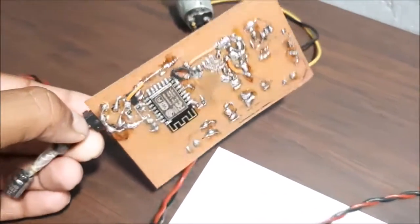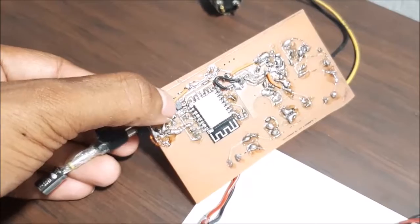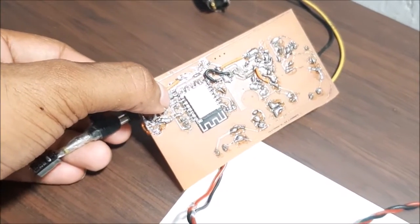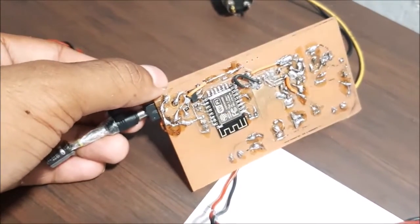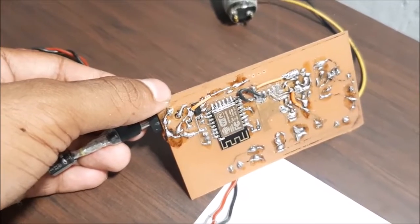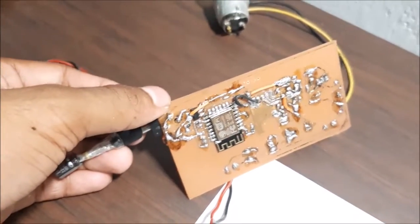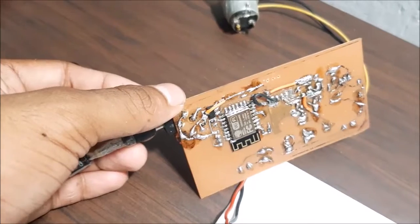If you're curious about the ESP8266, it's on the back side of the PCB along with the 3.3 volt voltage regulator right here. As you can also see, I have made some mistakes while soldering the PCB and I fixed that with some jumper wires.